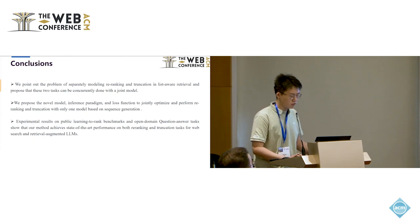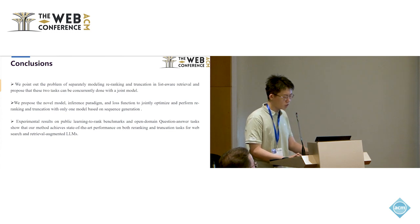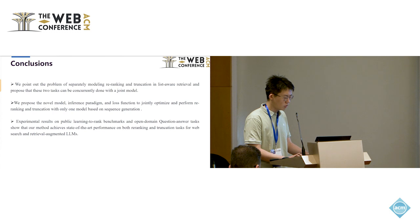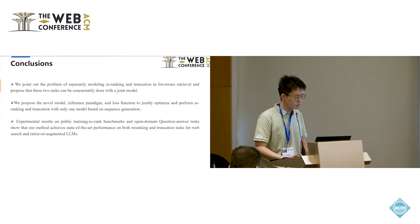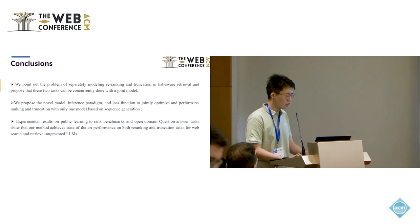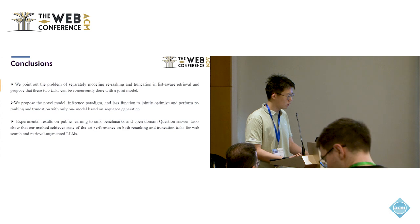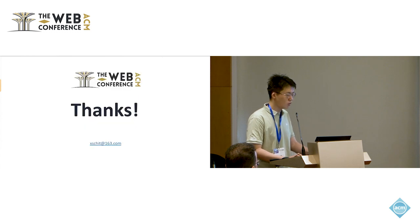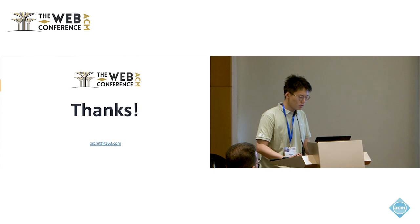In conclusion, in this paper, firstly, we point out the problem of separately modeling re-ranking and truncation in list-aware retrieval and propose that these two tasks can be concurrently done with a joint model. Second, we propose the novel model inference paradigm and loss function to jointly optimize and perform re-ranking and truncation with only one model based on the sequence generation. The experimental results on public learning to rank benchmark and open domain question-answering tasks show that our method can achieve state-of-the-art performance on both re-ranking and truncation for web search and retrieval augmented large language models. Thanks for your attention.